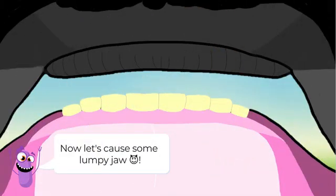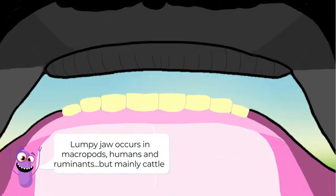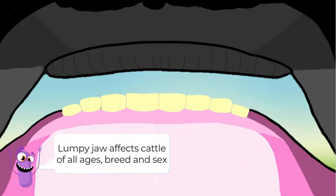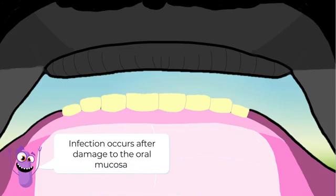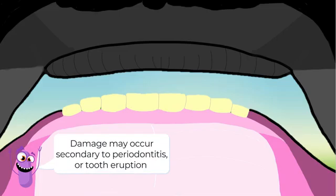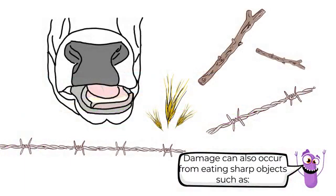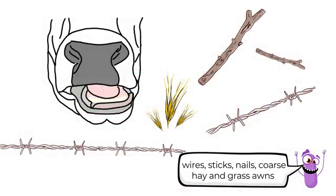Now let's cause some lumpy jaw. While lumpy jaw occurs in macropods, humans, and other ruminants, I mainly prefer cattle. Lumpy jaw occurs in all ages, breeds, and sexes of cattle. I'm what you would call an opportunistic pathogen, infecting after damage to the oral mucosa. Damage can occur secondary to periodontitis or tooth eruption, or after eating sharp objects. Cattle mainly fed rough hay and silage have a higher incidence of disease.